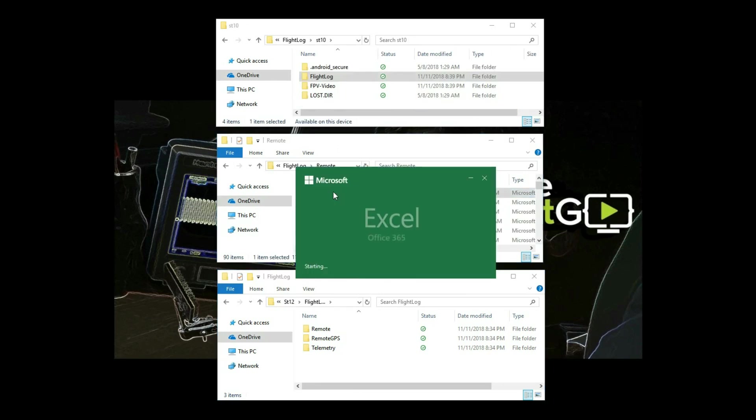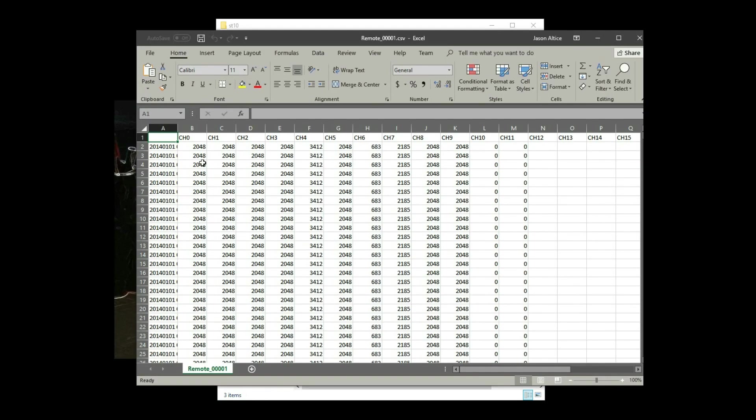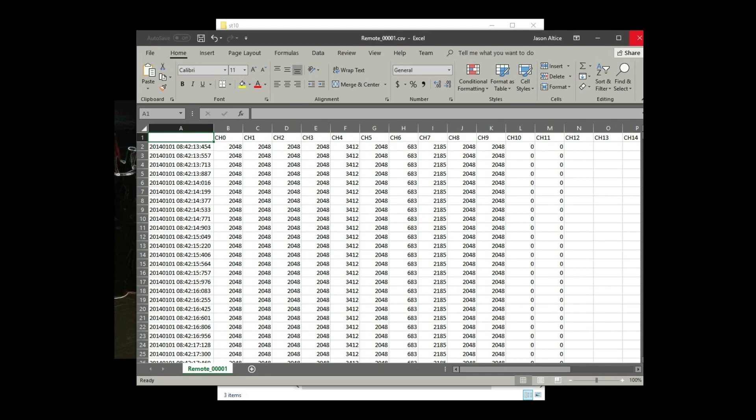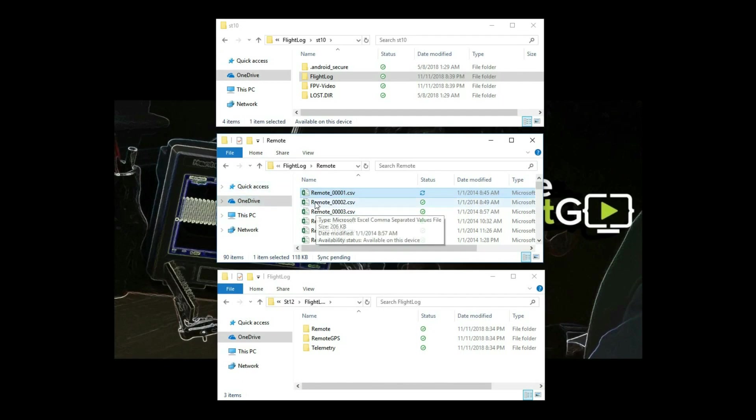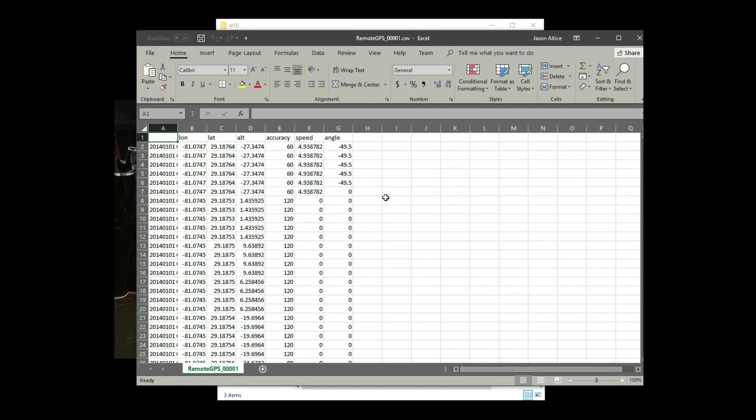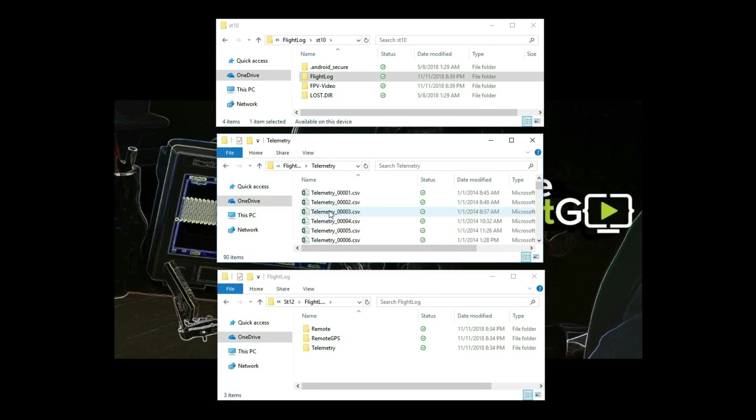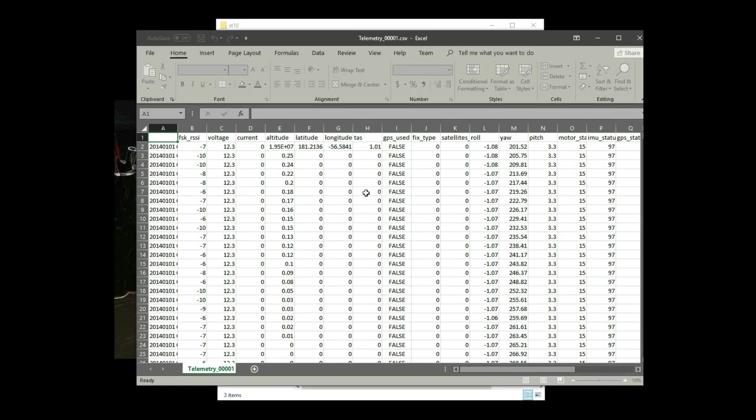Getting back to the data, we have the controller log which records all of the controller input by the user. We also get the remote GPS log which tells you the lat and long where you were controlling the drone.